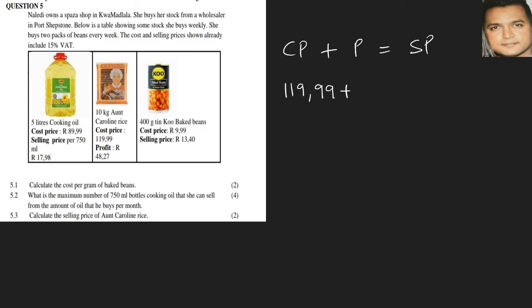And we add our profit which is given to us. That's in this area here. So we're adding the 48 Rand and 27 cents, which is our profit, and that will give us our selling price of 168.26.